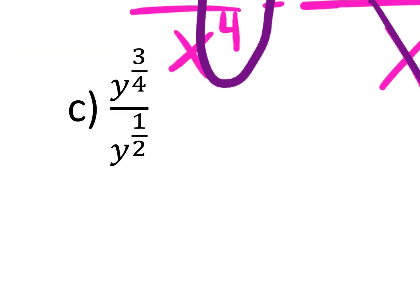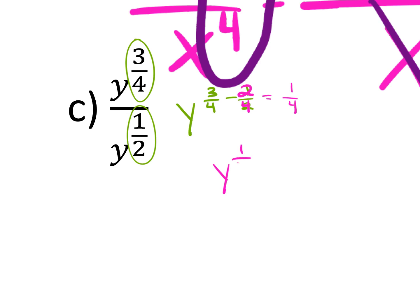Over here, it's y to the 3/4 minus 1/2. What is one half in terms of fourths? Two fourths. So 3 fourths minus 2 fourths is 1 fourth. This one's pretty straightforward: y to the one-fourth power.